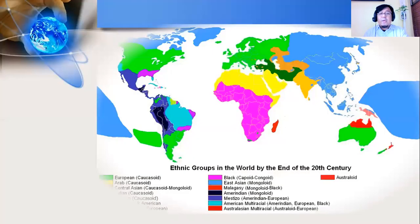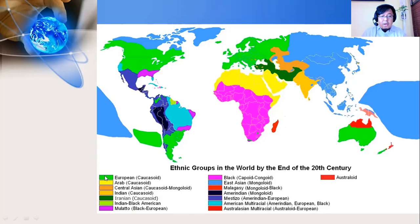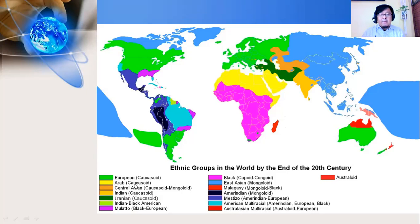First, we look at the ethnic groups in the world by the end of the 20th century, taken from a Microsoft source. The world map shows different colors representing different ethnic groups — we can count about 15 names of ethnicities. We have European and Arab groups, most of which are Caucasian, referred to as 'Caucasoid,' and Central Asian groups known as a mixture of Caucasoid and Mongoloid.